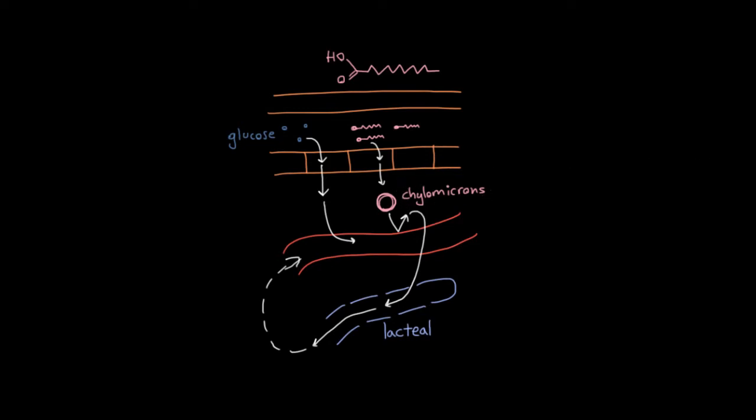So here we have our third important function of the lymphatic system, which is to transport things which didn't originally come from the blood, to transport them into the blood. And we can sort of generalize it a little bit and say that maybe a little further away from the small intestine, somewhere else, you have some cells that are hanging out.